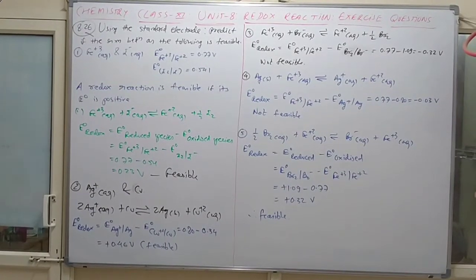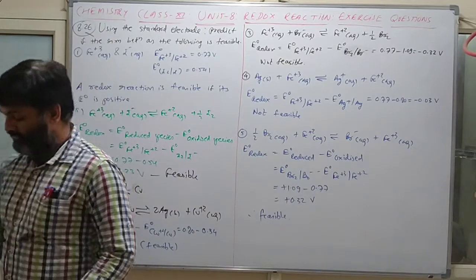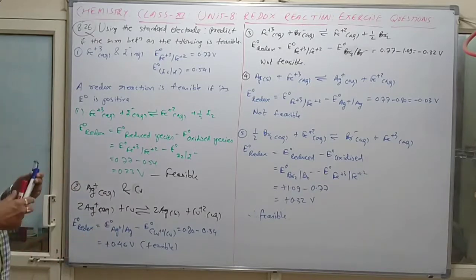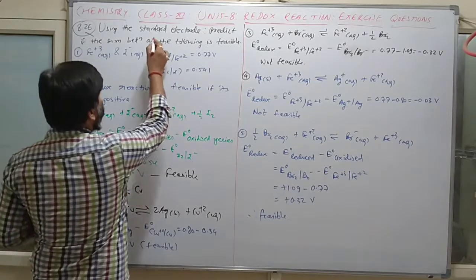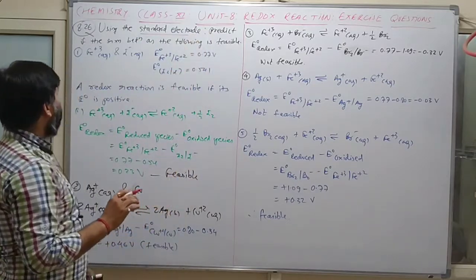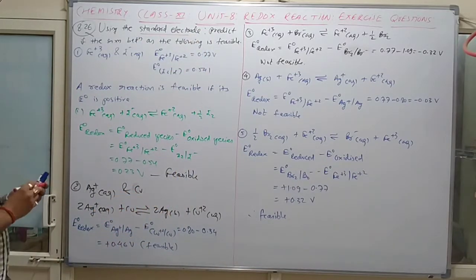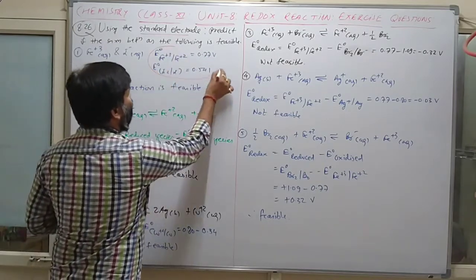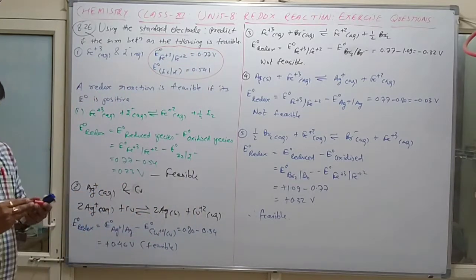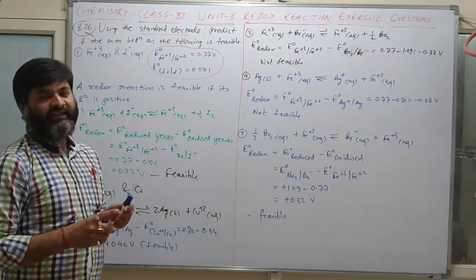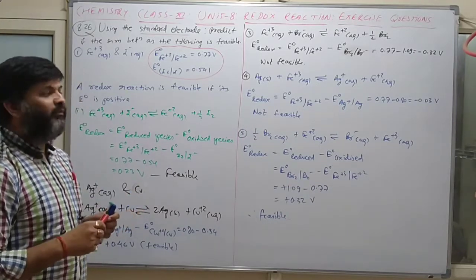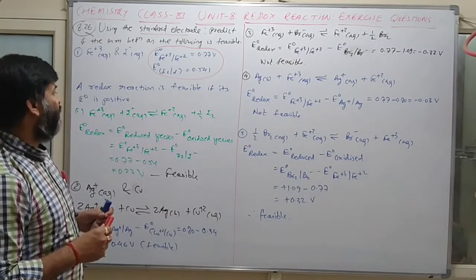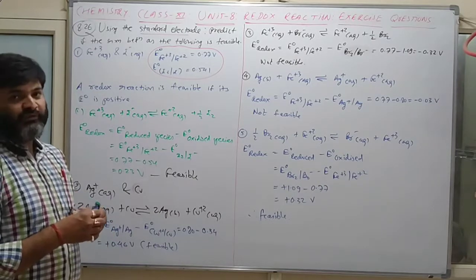Question 8.26: Using the standard electrode potential, predict if the following reactions are feasible or not. These values are given in your textbook in tabular form. First, calculate the E cell value. If the E cell value is positive, the reaction is possible. If the E cell value is negative, the reaction is not possible.